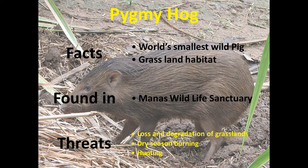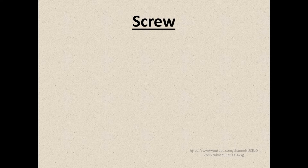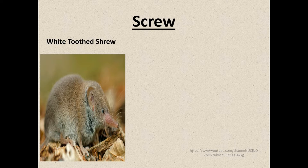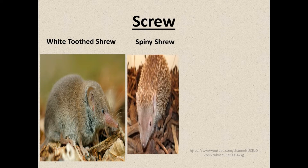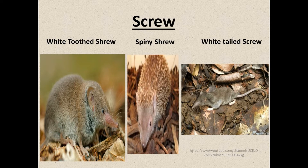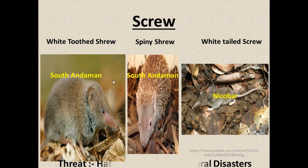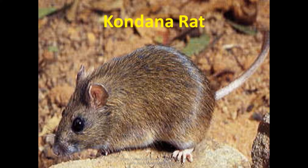Next are shrews, which are also critically endangered. There are three types: white-toothed shrew, spiny shrew, and white-tailed shrew. The white-toothed shrew and spiny shrew are found in South Andaman, while the white-tailed shrew is found in Nicobar. The threat to shrews is habitat loss due to natural disasters like tsunamis and climate change.